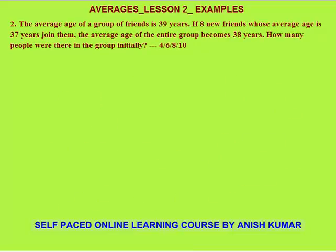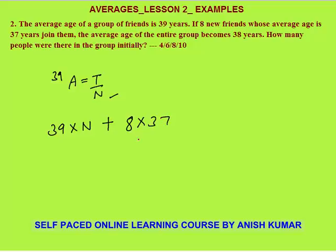Second question: the average age of a group of friends is 39 years. If 8 new friends whose average age is 37 years join them, the average age of the entire group becomes 38. How many people were there in the group initially? We only know one formula: average equals total divided by n. The average age is 39 years but we don't know how many students were there — let's say n students. So total age earlier was 39 × n. Then 8 new friends with average age 37 join, so their total age is 8 × 37.